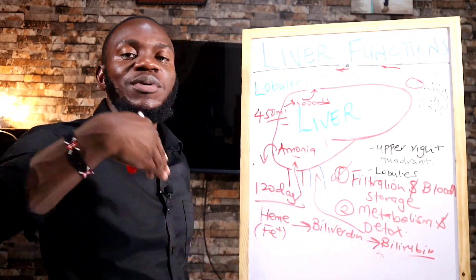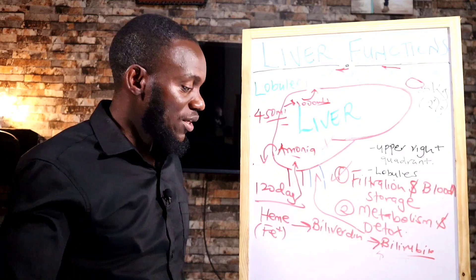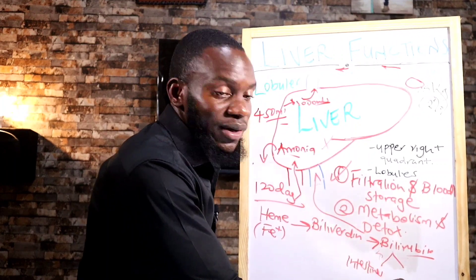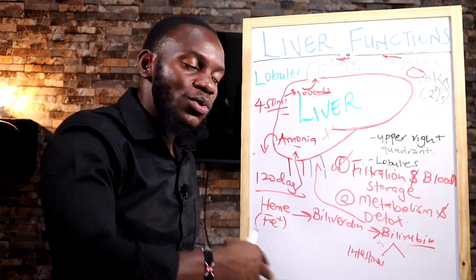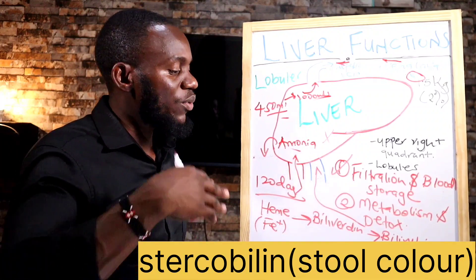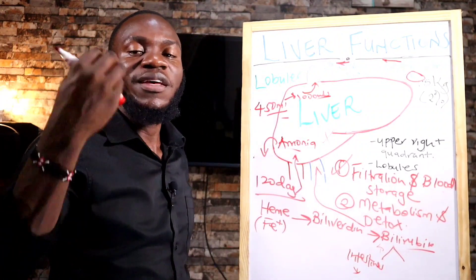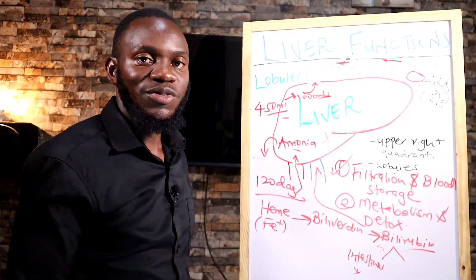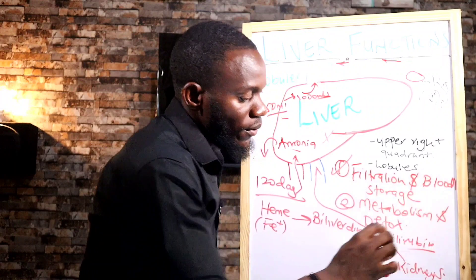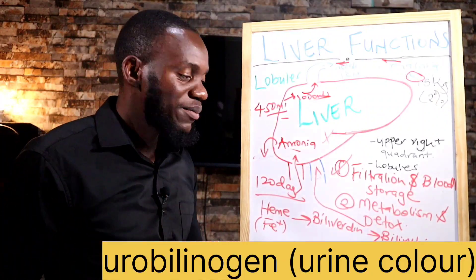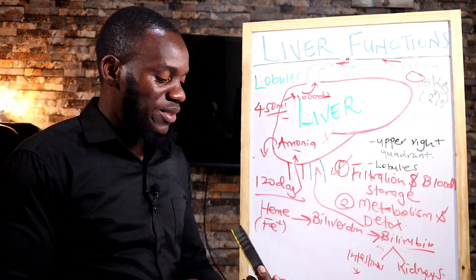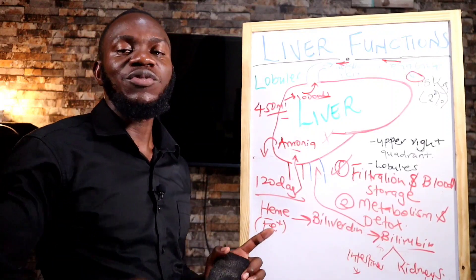Once bilirubin is taken into the liver and conjugated, it goes into two channels. One goes into the intestines to form stercobilin, which gives stool its brown color — that is one way it is excreted. The other way is it goes to the kidneys to form urobilinogen, and the kidneys excrete it as urine. It is also responsible for the brown color of urine. So bilirubin from red blood cells is what gives your stool and urine their color.